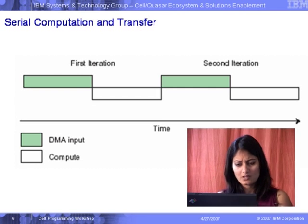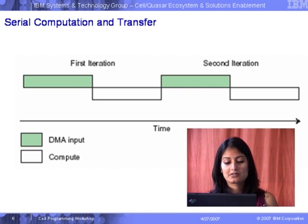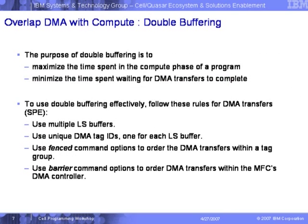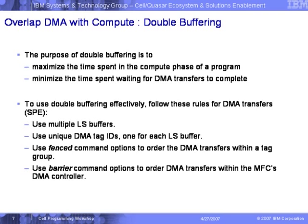We start a DMA data transfer from main storage to buffer B, wait for transfer to complete, use the data in buffer B, and repeat. The purpose of double buffering is to maximize time spent in compute and minimize time waiting for DMA transfers to complete. Double buffering uses two local store buffers; triple buffering uses more. The same rules for fences and barriers apply with double buffering techniques as well.